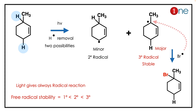If you look at the first one, it is a secondary radical — that is the minor product. If you look at the second one, the radical forms near the methyl group on the ring — it is a tertiary radical. Looking at radical stability: primary is less stable than secondary, which is less stable than tertiary. So the tertiary radical is the most stable and gives the major product.